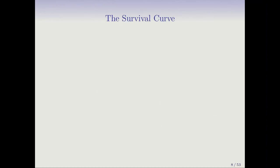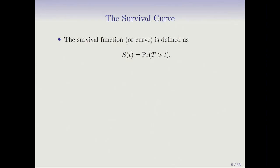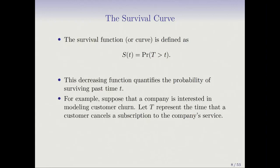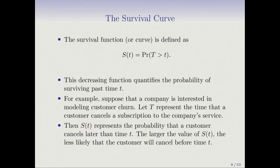Given survival data, the basic summary one makes is called the survival curve. The survival curve is the probability that the true survival time T is greater than some fixed value t — it's a function of time that decreases because as t gets larger, the chance of surviving past t gets lower. In the churn example, if t is the time until a customer cancels, the survivor function is the probability that a customer cancels later than time t.